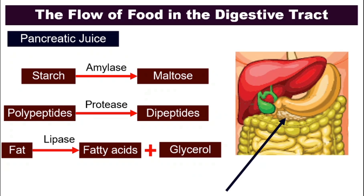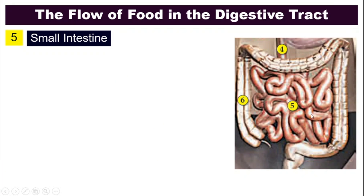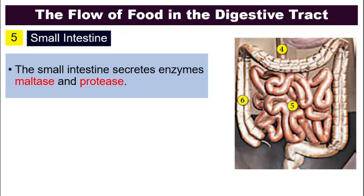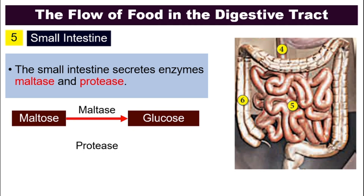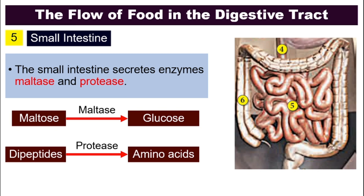Now the food is ready to go into the small intestine. The small intestine secretes enzymes — this time it secretes maltase and protease. Maltase will digest maltose: the amylase has already digested starch into maltose, and now maltase will continue the job and digest maltose into glucose. Protease right now will work on dipeptides and digest them into amino acids.